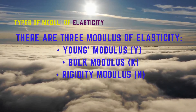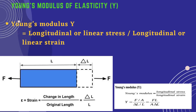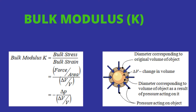Young's modulus is defined as the ratio between the longitudinal stress to longitudinal strain within the elastic limits. Consider a wire of length L with an area of cross section A. Let one end of the wire be fixed and the other end loaded. Let del L be the change in length due to the action of force. Then the longitudinal stress is equal to F by A, and the longitudinal strain is equal to del L by L. So Young's modulus Y is equal to (F/A) divided by (del L/L). The unit is Newton per meter squared or Pascals.